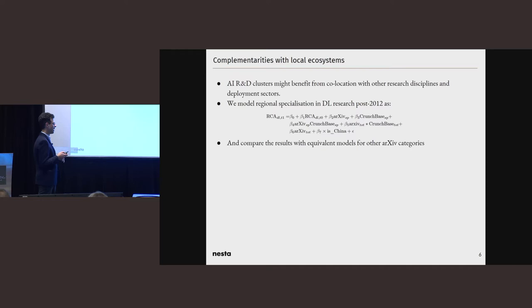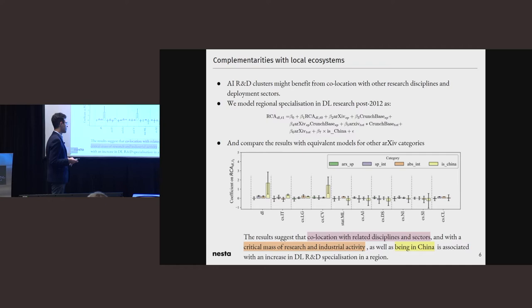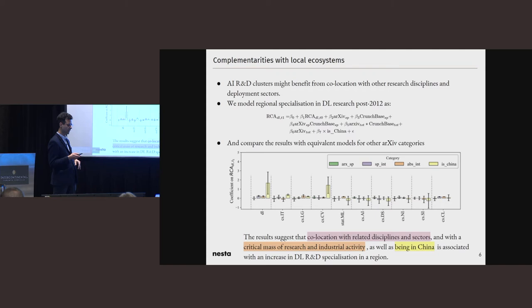And then what we do is we compare the results with equivalent models for other Archive categories. We take this model, and we fit it for papers with deep learning, but also papers in other computer science categories. And basically what we find, this is a deep learning coefficient, the results suggest that collocation with related disciplines and sectors, and with a critical mass of research and industrial activity, as well as being in China, is associated with an increase in deep learning research and development specialization in a region, which is consistent with the idea of how this collocation favors deployment, but it also might be picking up how there's a set of policy and regulatory factors not captured in our model and being absorbed by this China variable that is making a difference for regions in that country.